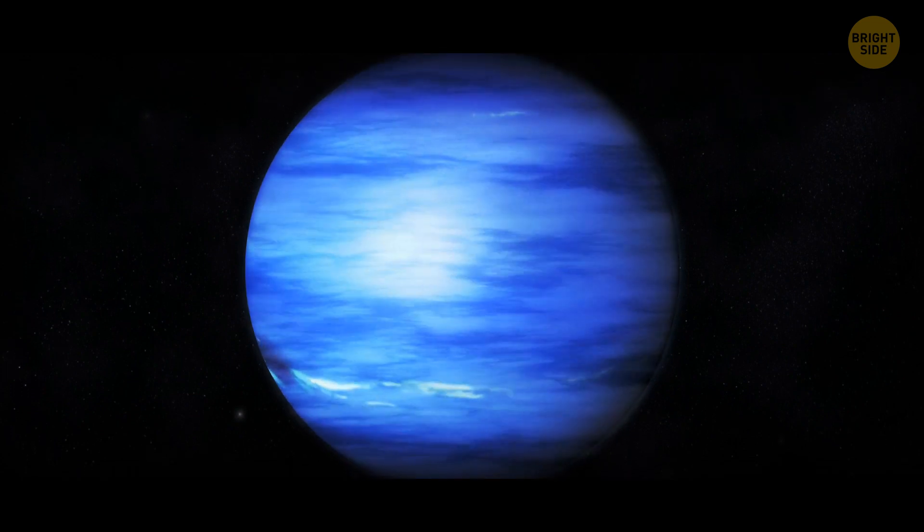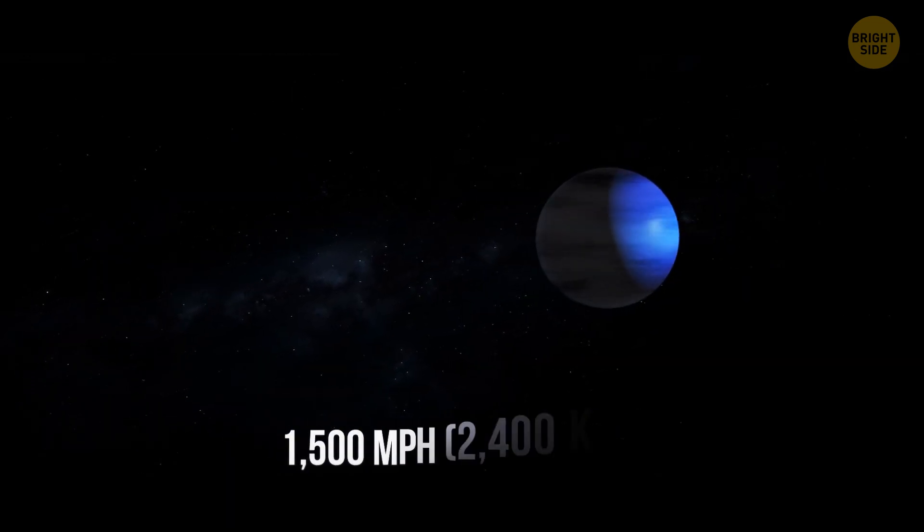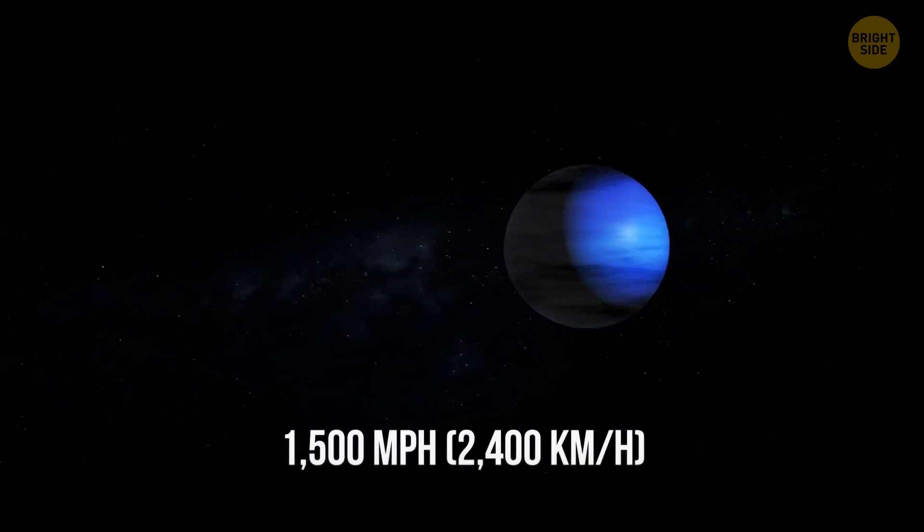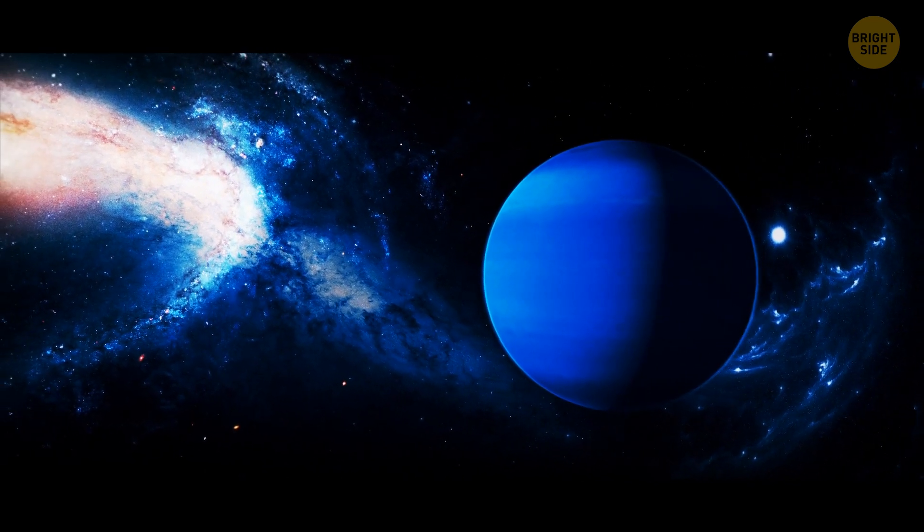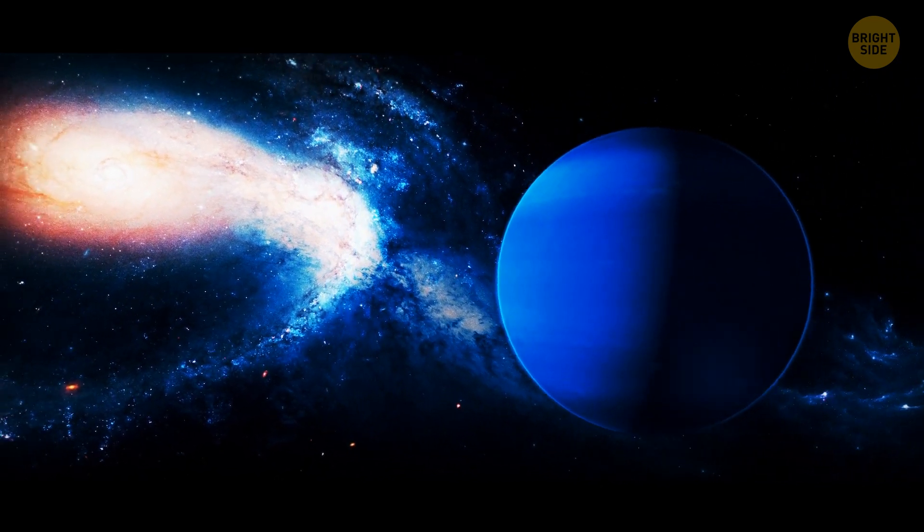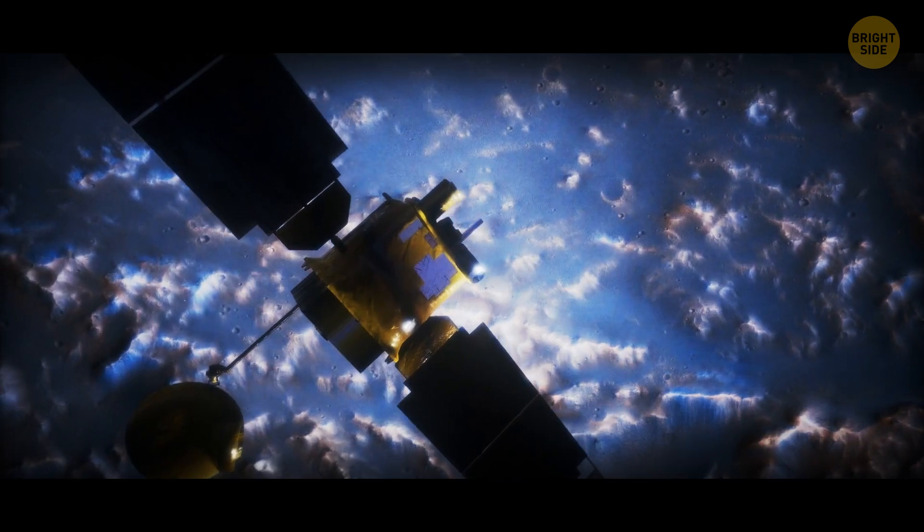The winds on Neptune are insanely strong, 1,500 miles per hour. No one still knows why. It could be a gravitational contraction, energy coming from its core, or the Sun. I hope we'll eventually find out.